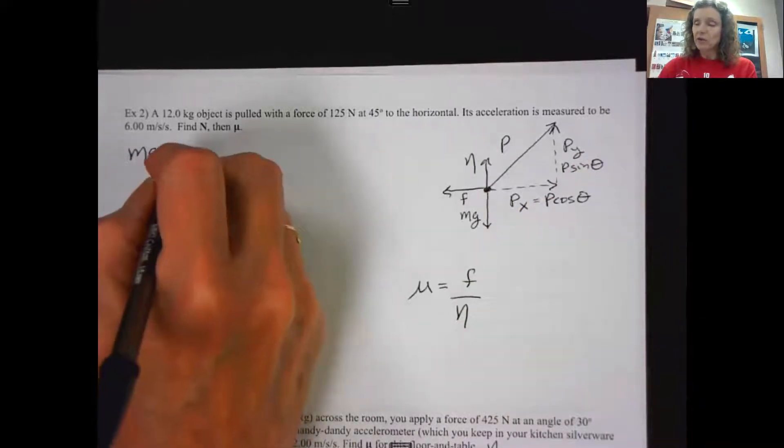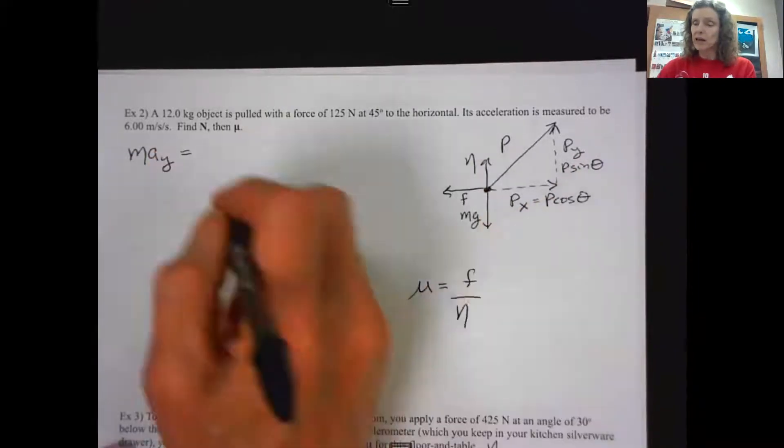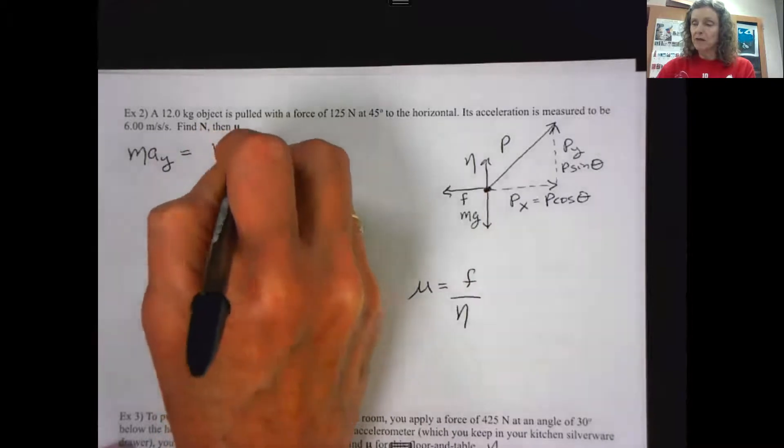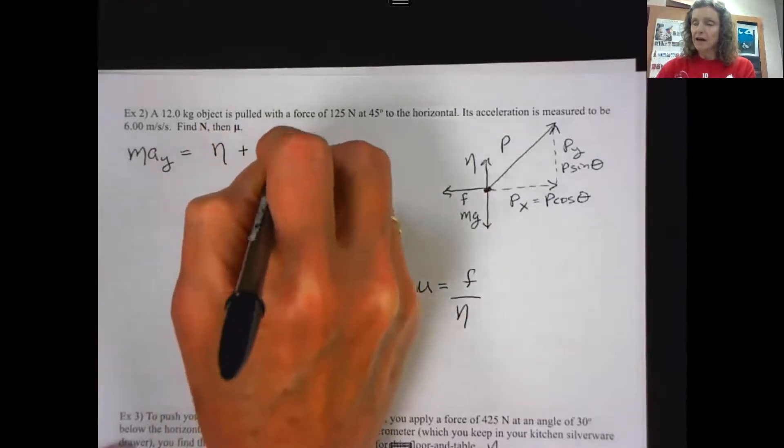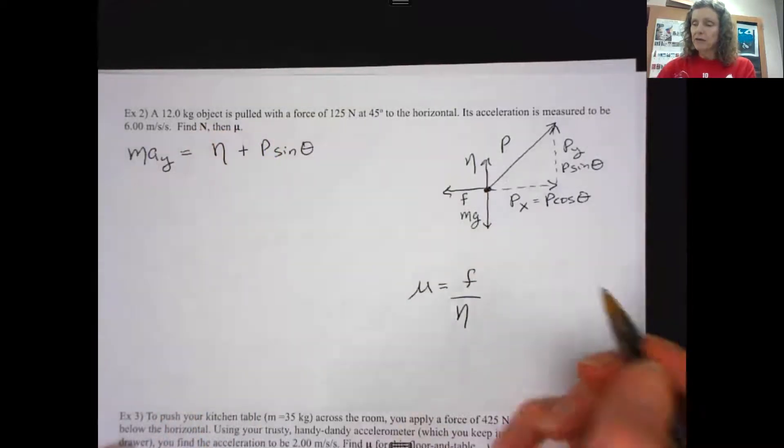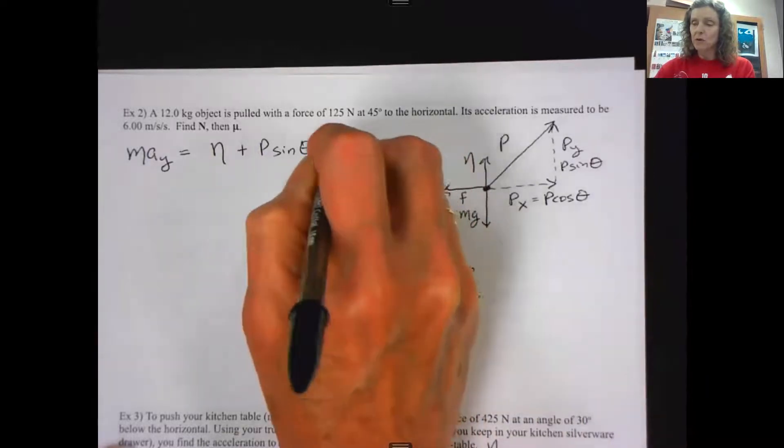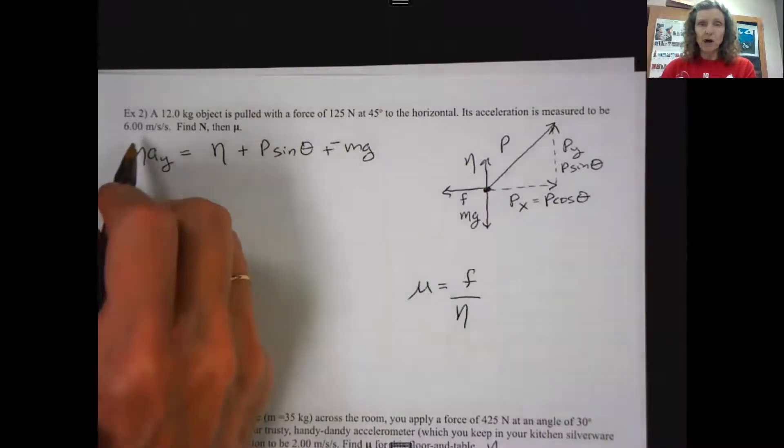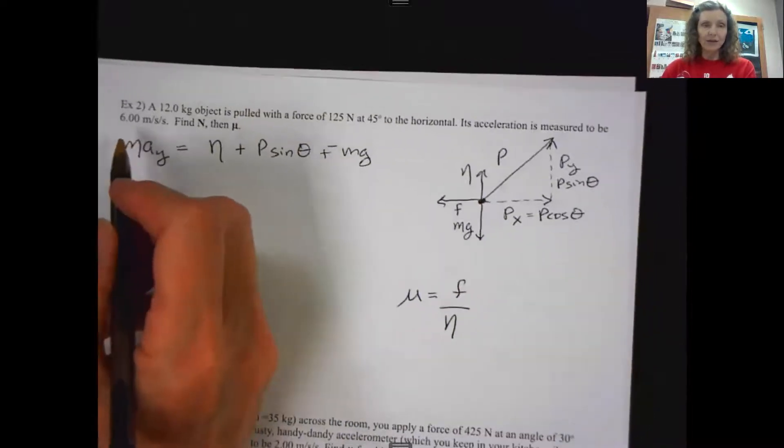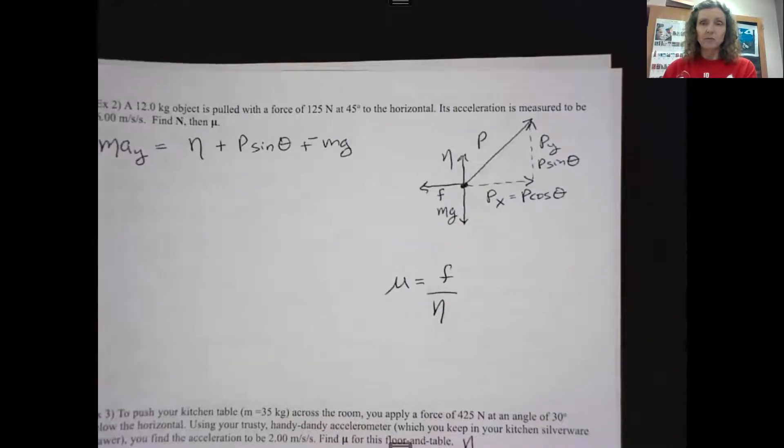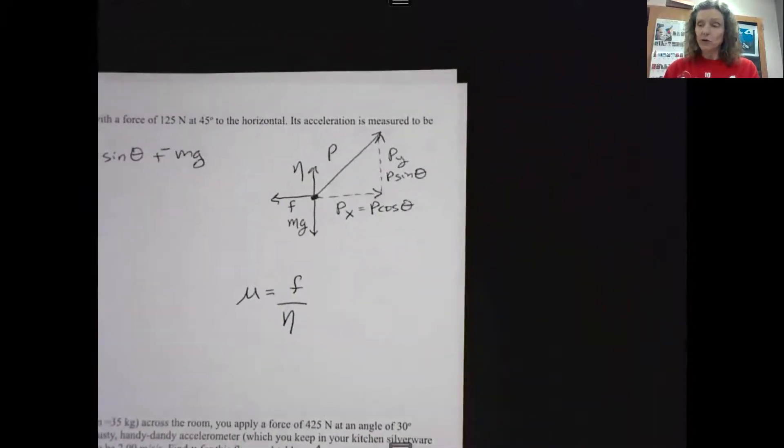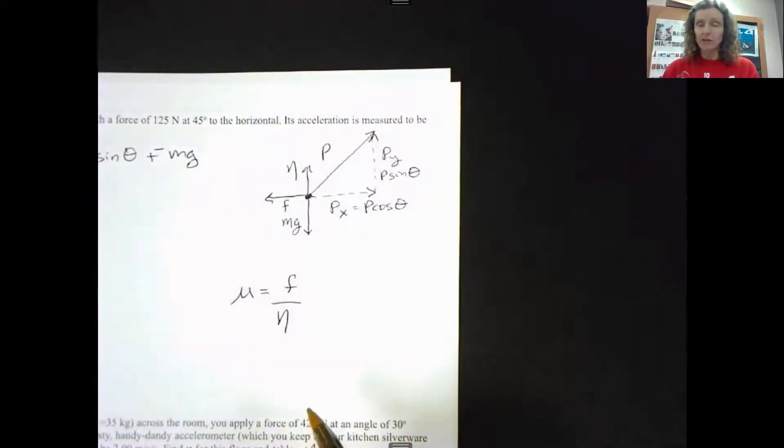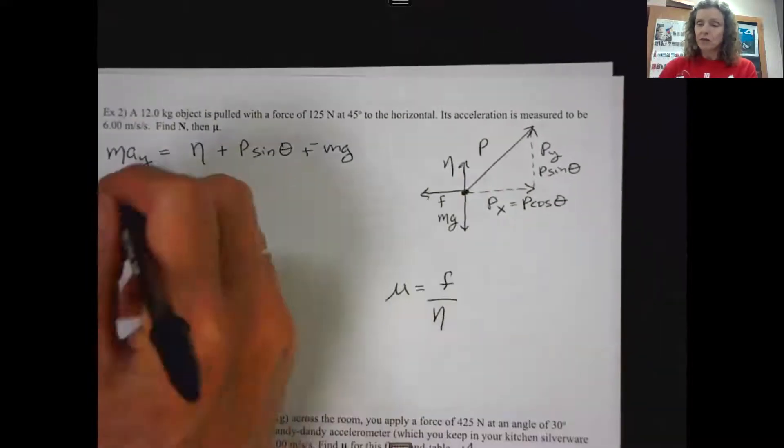So mass times acceleration in the y direction will be equal to, let's see, I have the normal up. That'll be positive. I have p sine theta up. That'll be positive. And I have mg or weight down. So I'm going to make that one negative. Be careful about acceleration. You've just read a problem that tells you you have six meters per second of acceleration, but this is in the y direction. We don't want this thing flying up in the air. So that acceleration should be zero. So this is going to go in a zero.